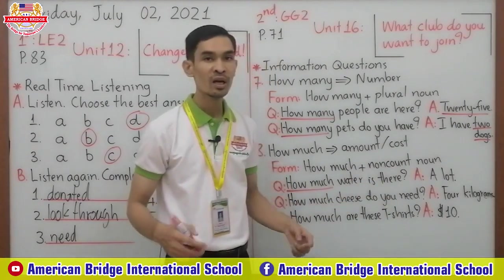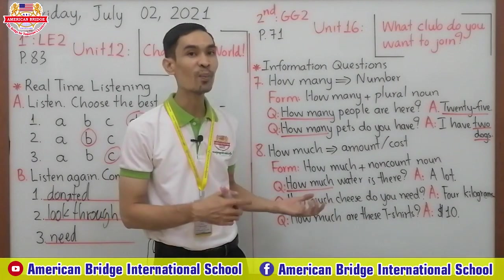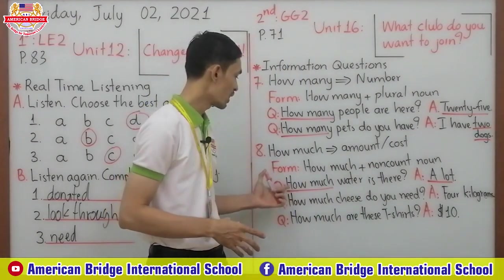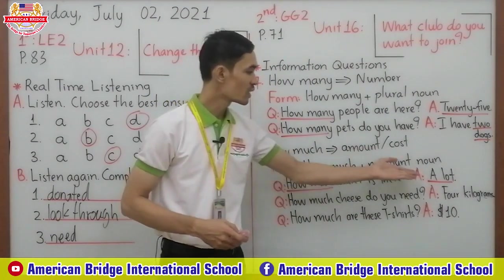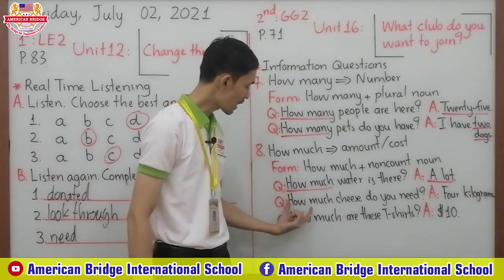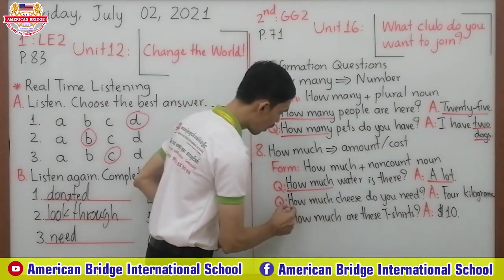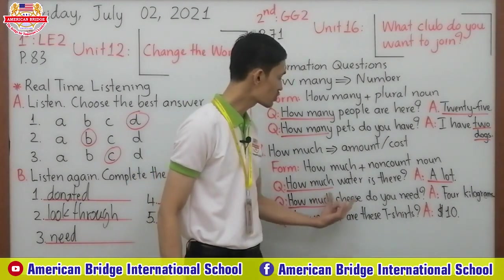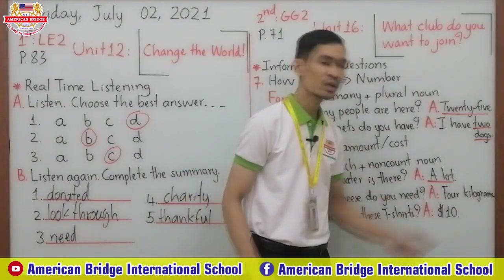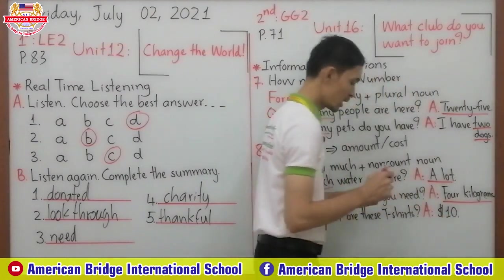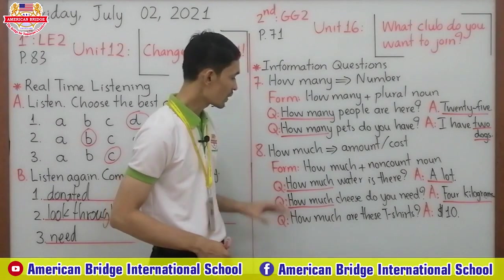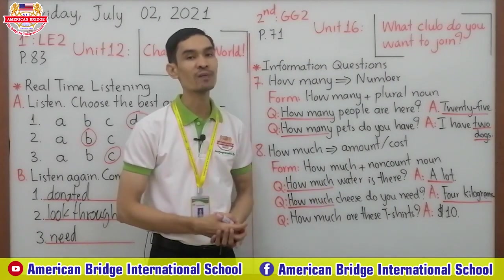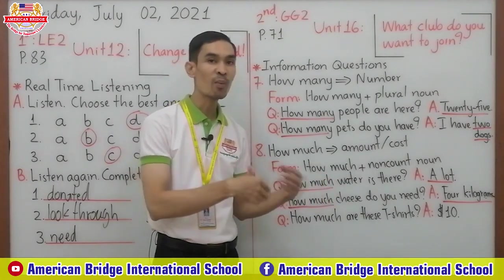The answer is an amount — 'a lot.' When you ask 'how much,' the answer gives the amount. Another example: 'How much cheese do you need?' — cheese is a non-count noun. The answer is 'four kilograms,' which is the amount. So we use 'how much' plus a non-count noun to ask the amount of something. You do not use 'how much' plus a count noun.